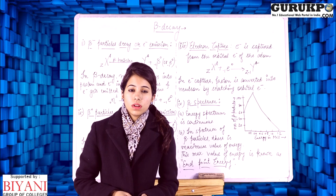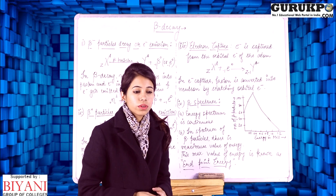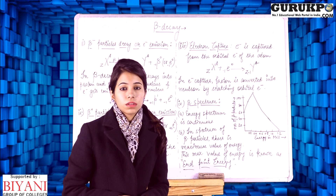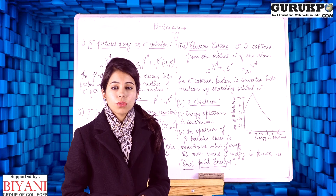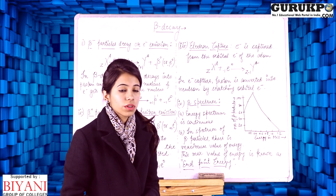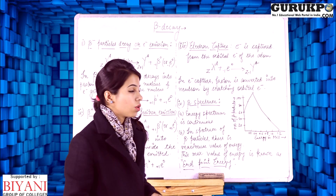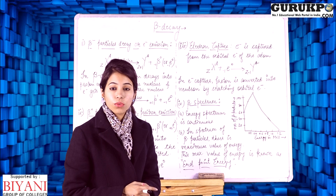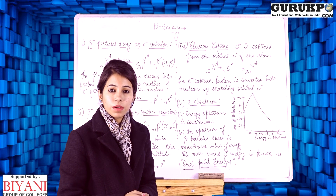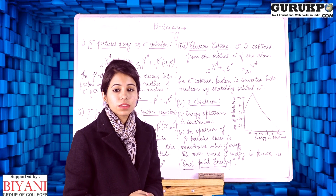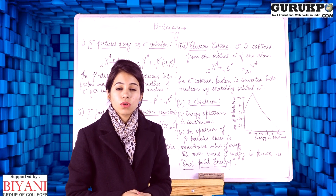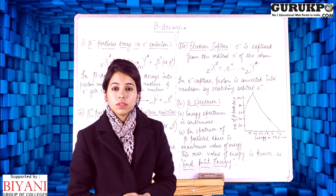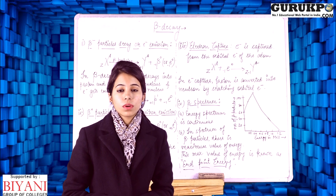First of all we should know what beta decay is. In beta decay, the nucleus undergoes a transition by the emission of either beta minus particles — that is, electrons — or beta plus particles — that is, positrons — or electron capture. We will discuss all three cases one by one.